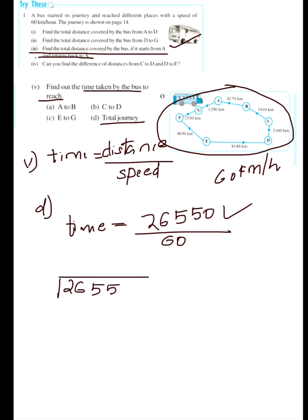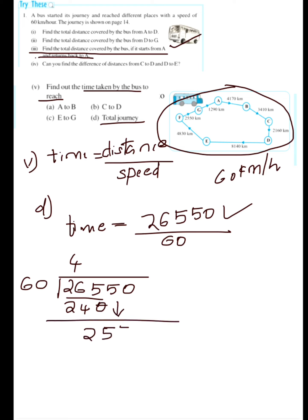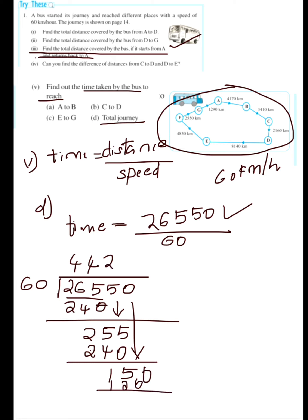Dividing 26,550 by 60: 265 — 4, 240; 5, 2, 5; 4, 240; 1, 150; 2, 120; 3, 0; 0 — giving 0.5. So the answer is 442.5 hours. The time taken by the bus for the total journey equals 442.5 hours.